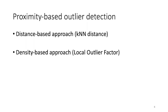To explain how an outlier detection algorithm works, we start with a simple distance-based approach: the k-nearest neighbors algorithm. We'll use its principles to explain a more developed algorithm, the local outlier factor, which is a density-based approach.